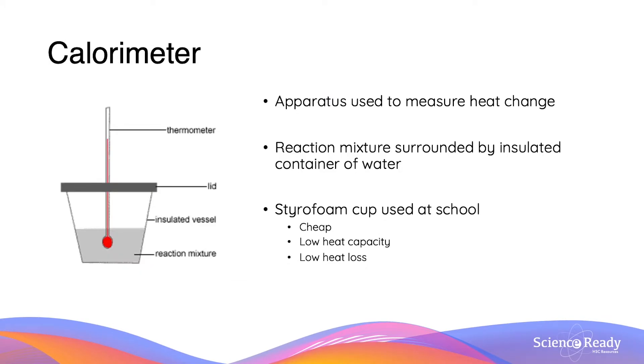A calorimeter is an apparatus which is used to measure heat changes. This is done by attaching a thermometer to an insulated vessel surrounding a reaction mixture. By doing this we can measure the temperature change and from there calculate the enthalpy change. Now industrially, we would use an apparatus which is called a bomb calorimeter. But in school we conduct this using the so called coffee cup calorimeter which is demonstrated on the left hand side here.